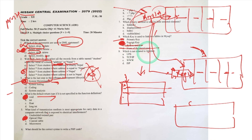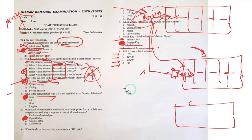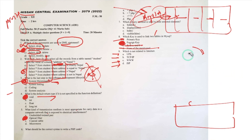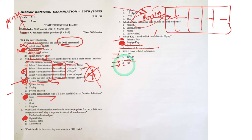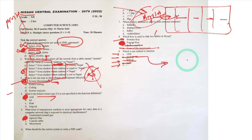Which is not related to the internet? Options: UPS, TCP/IP, WWW, ISP. WWW stands for World Wide Web. ISP stands for Internet Service Provider. TCP/IP stands for Transmission Control Protocol / Internet Protocol — it is the common protocol used by the internet, which is a network of networks sharing millions of computers. UPS stands for Uninterruptible Power Supply — it is not related to the internet, so UPS is the answer.